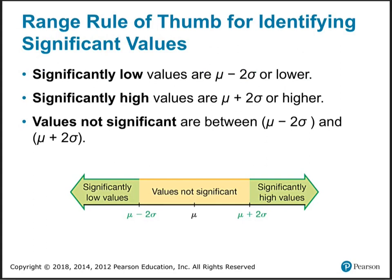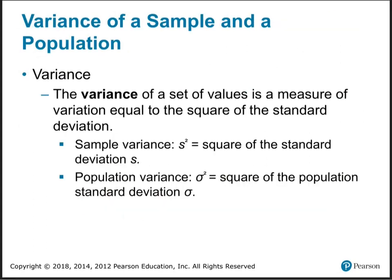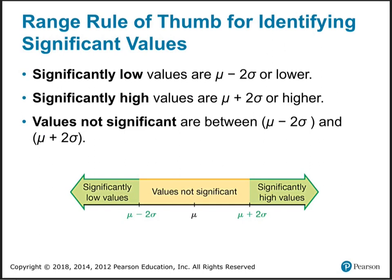You don't really need to know all that symbolism right now. What's important is that when you're measuring anything in the real world — say men's shoe sizes — there's some average men's shoe size. The symbol for average is mu, a Greek letter. Don't worry about all that right now.